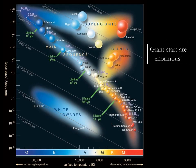Giant stars are enormous. For example, Aldebaran in the constellation Taurus and Arcturus in the constellation Bootes are both more than 10 times as large as our sun. Betelgeuse is an enormous supergiant with a radius of about 1,000 times that of the sun.